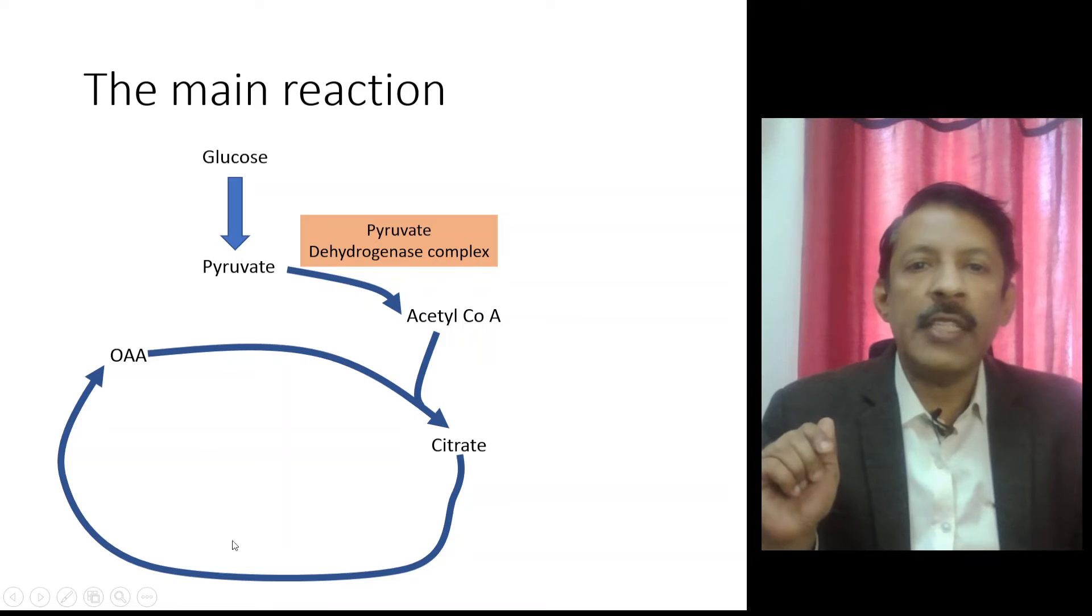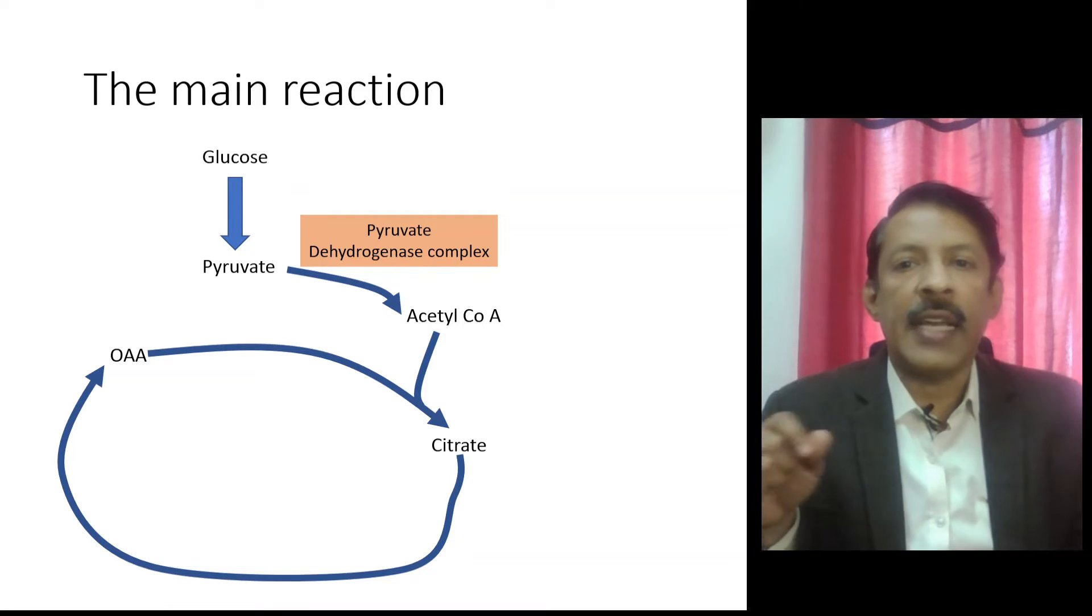Pyruvate then, with the enzyme pyruvate dehydrogenase complex, converts pyruvate into acetyl coenzyme A. Acetyl coenzyme A binds to oxaloacetate to form citrate and the TCA cycle starts.